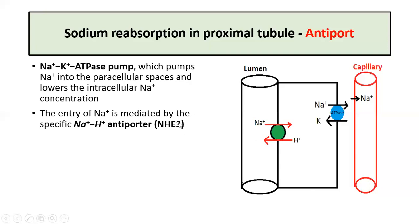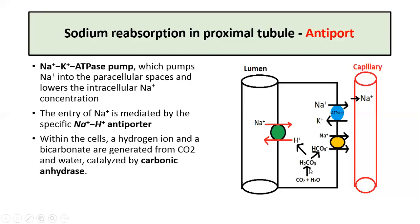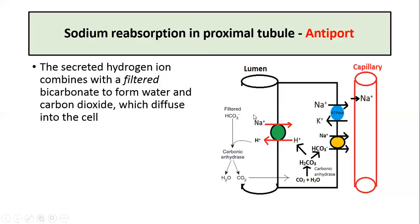The hydrogen inside the cell is generated from carbon dioxide and water, and the reaction is catalyzed by the enzyme carbonic anhydrase. This reaction also generates bicarbonate. The hydrogen which is secreted into the tubular lumen combines with the filtered bicarbonate, forming carbon dioxide and water in the presence of carbonic anhydrase.